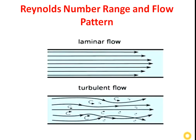First we will see the types of flow. There are mainly two types of flow: laminar flow and turbulent flow. In laminar flow, the fluid layers travel parallel to each other and do not intersect. In turbulent flow, the fluid layers travel in a zigzag path and intersect with each other, as you can see in the picture.